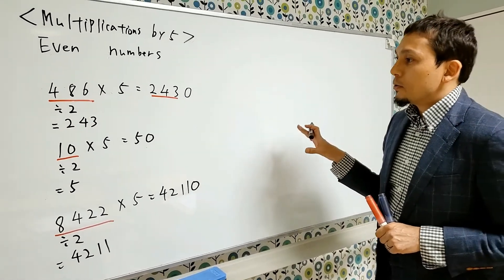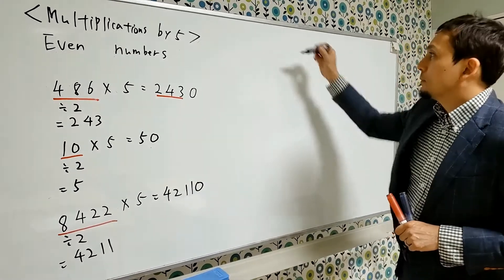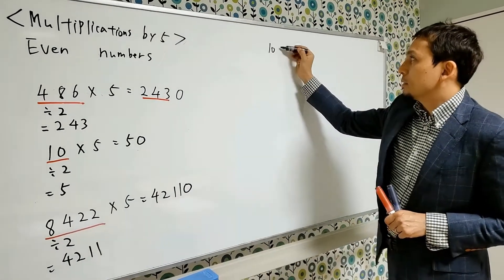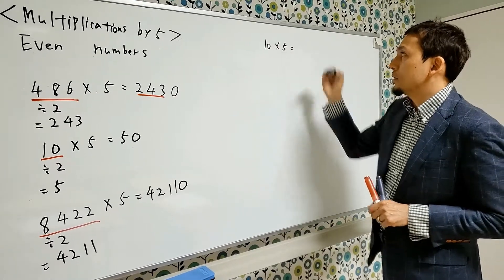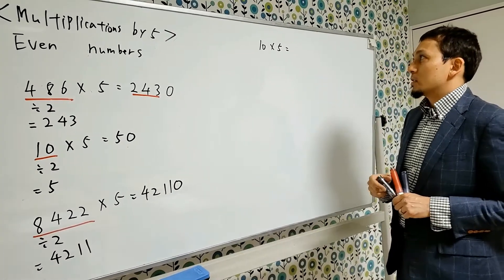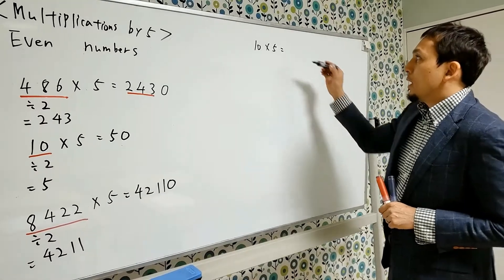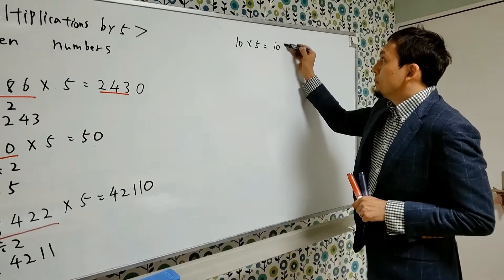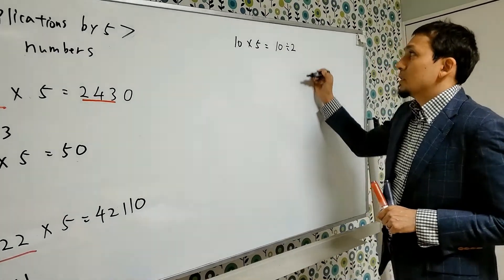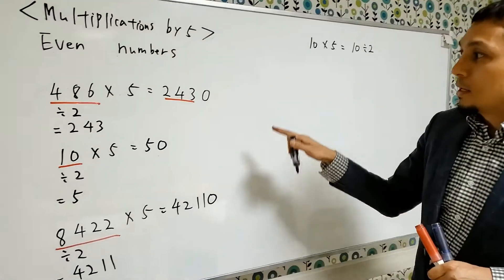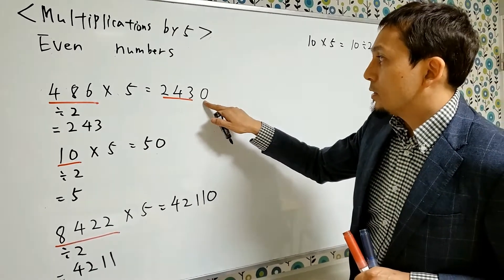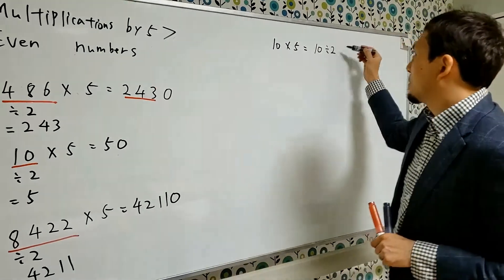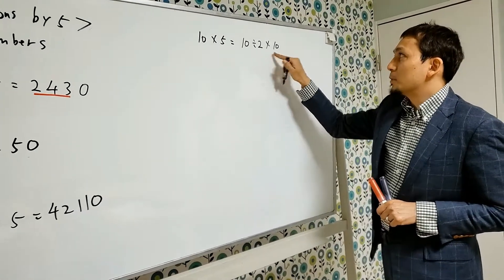Now, let me tell you the mechanism, or trick. Let me use this simpler equation again: 10 times 5. So in order to do this calculation, first I divided 10 by 2. And after that, I added 0 to the units place. This means I multiplied by 10.